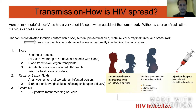Through blood transmission, the most common route is sharing of needles, especially when sharing needles while using illegal drugs. It's important to know that HIV can live up to 42 days in a needle that has blood in it. It's not very common, but transmission has happened through blood transfusion or organ transplants — though since everything is screened so well nowadays, that is extremely rare. Health care providers also need to be aware of the risk of an accidental stick with an infected HIV needle.